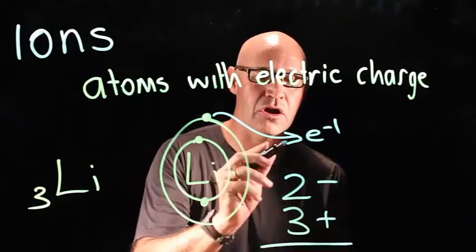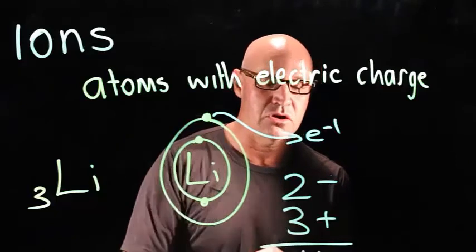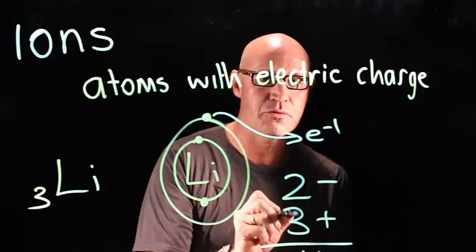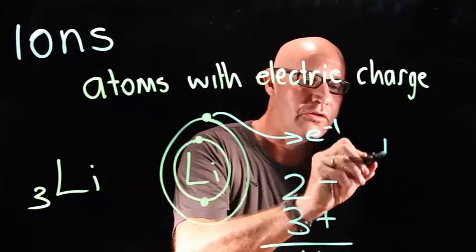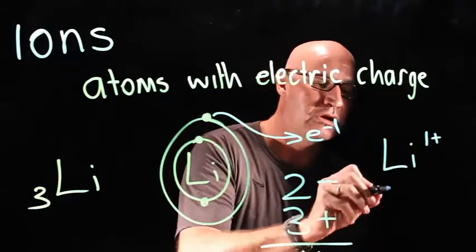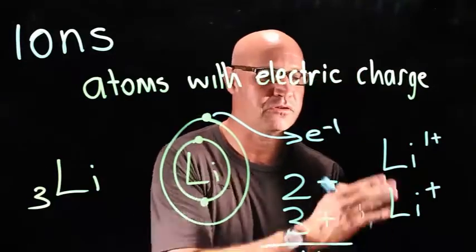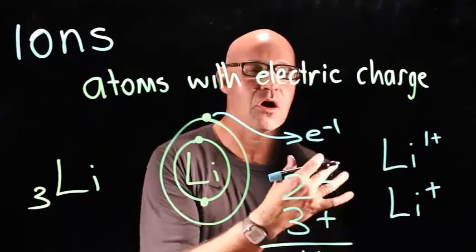Can you see now that overall there's a charge of one plus? There's one more proton than there is electrons. So lithium ion has a charge of one plus. We usually just express that with a plus because the one is implied. And then it becomes lithium ion.